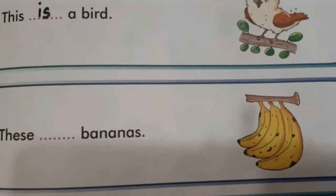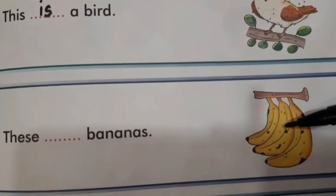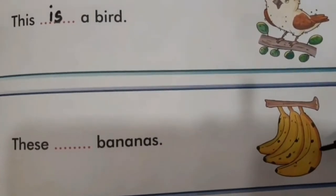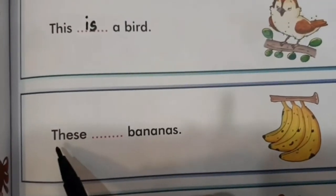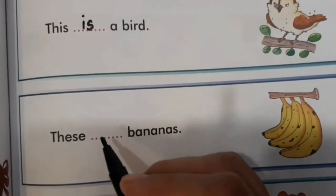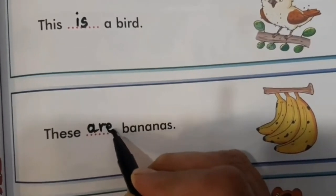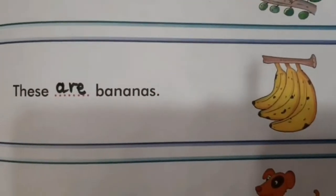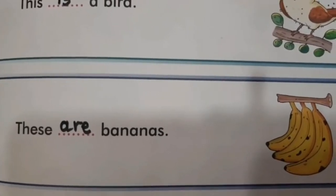Next hain bananas. Dekho, kitne bananas hain — one, two and three. There are three bananas. Toh yeh toh one se zyada ho gaye. Toh yehaan peh hum likhenge? 'These ___ bananas.' Toh bacho bolou, yehaan peh kya likhenge? 'Are'. These are bananas. Yehaan peh 'are' is liye likhenge kyunki ek se zyada hai.